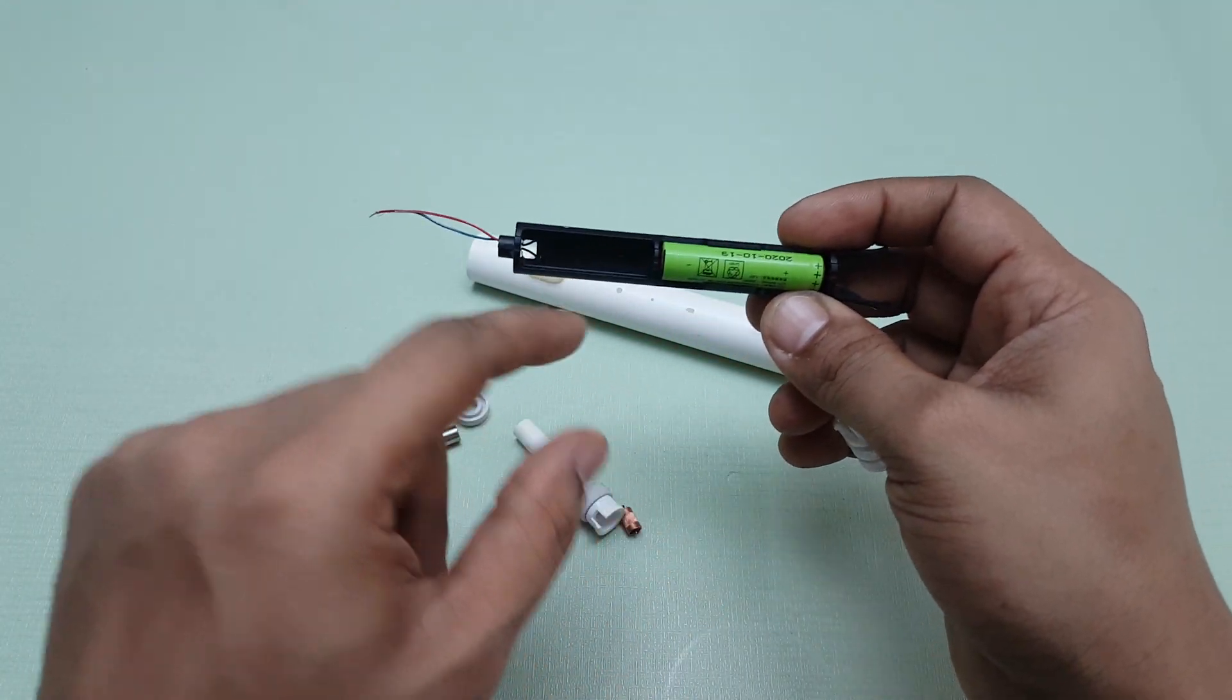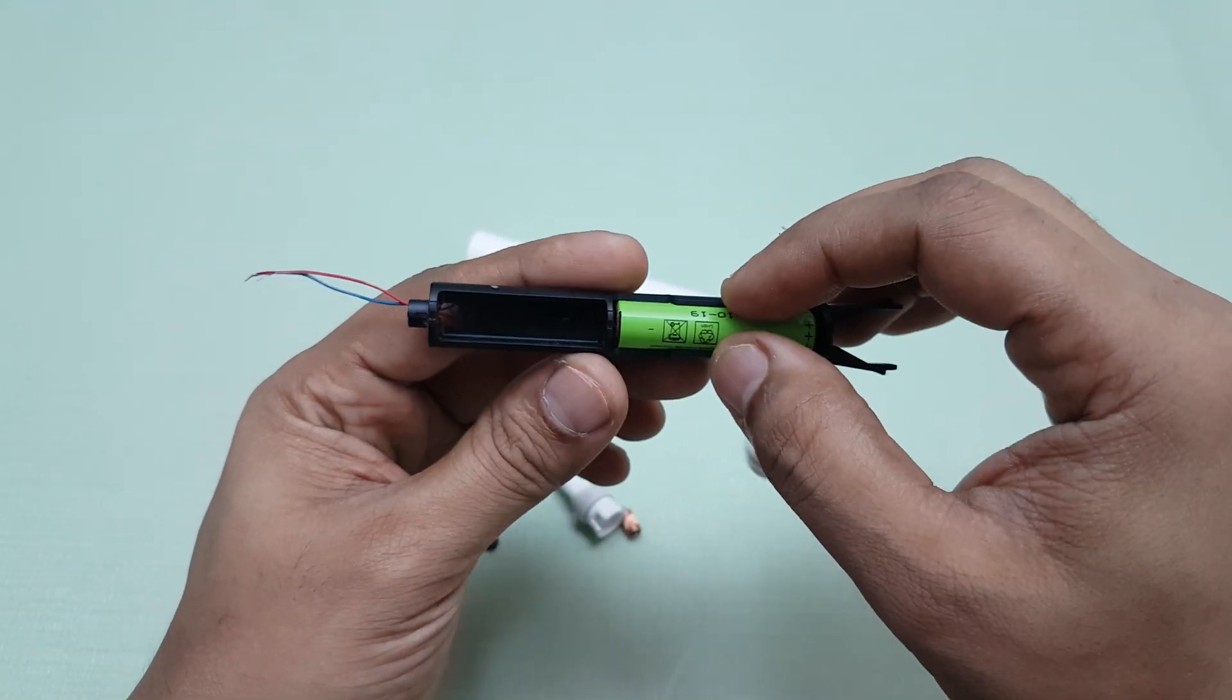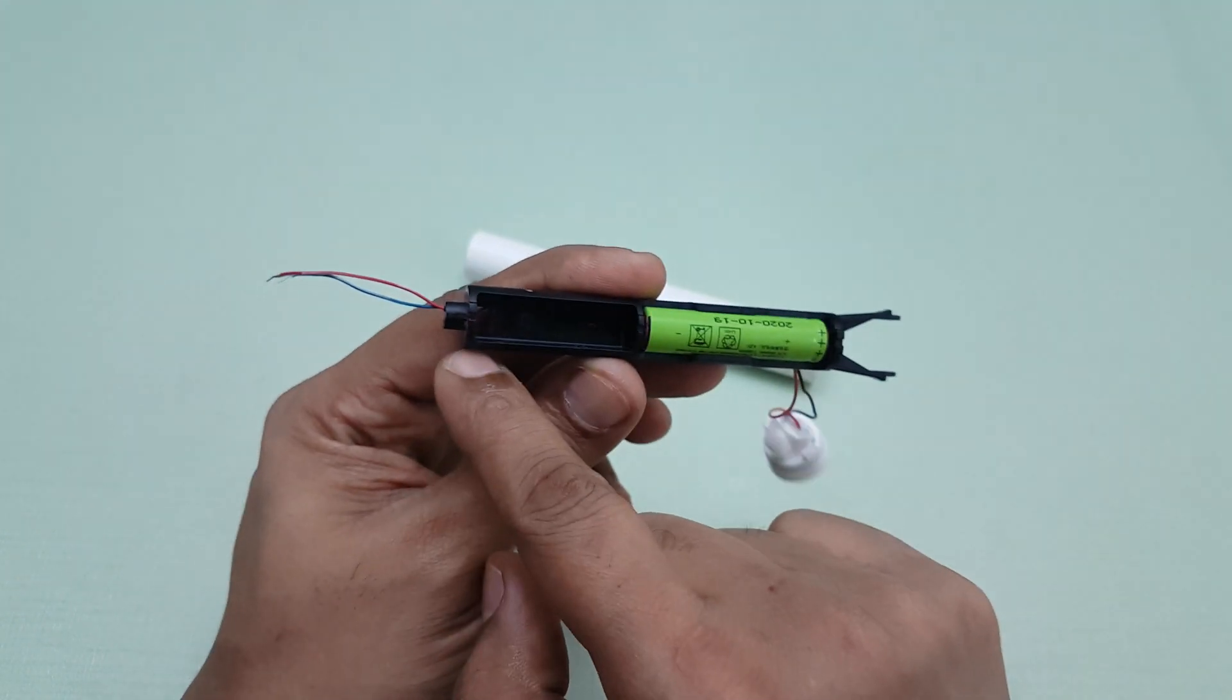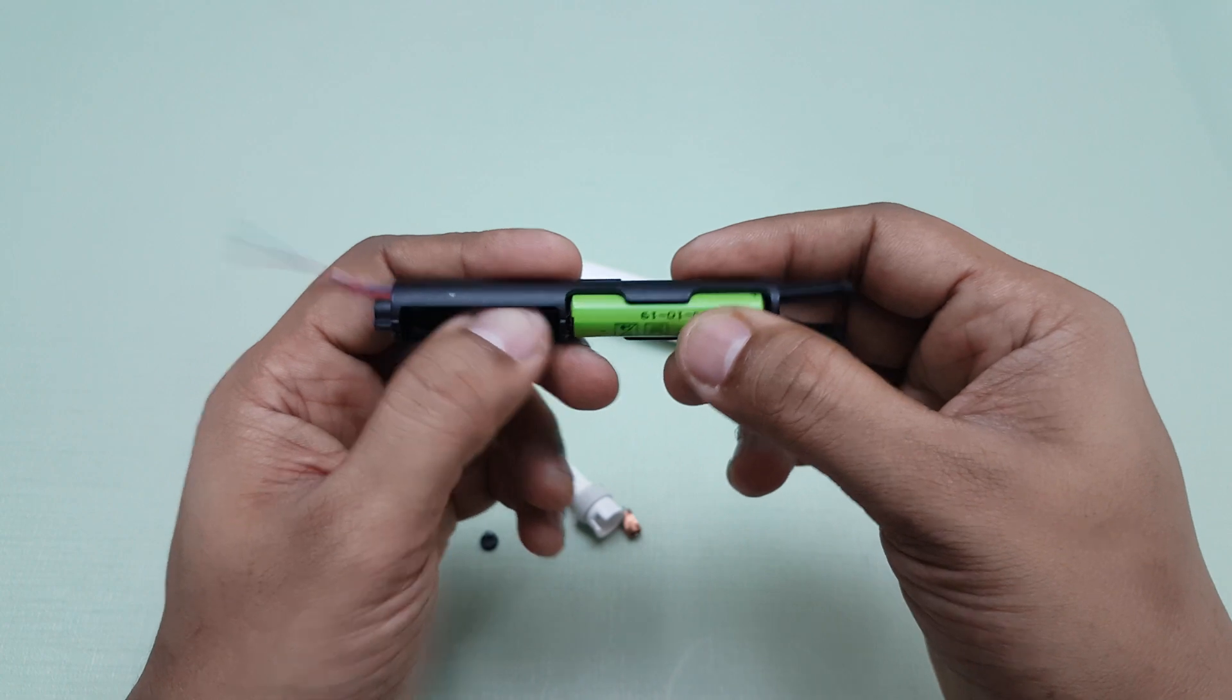It looks like there was space for two batteries. They put one over here. Maybe the higher version has two batteries. That's why the slot over here. So this is completely empty.